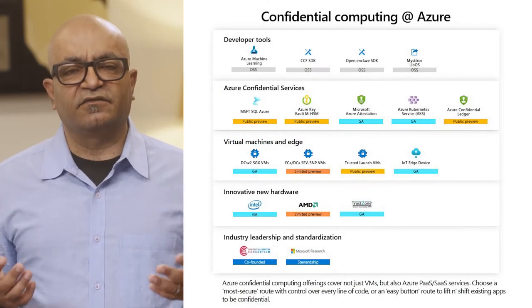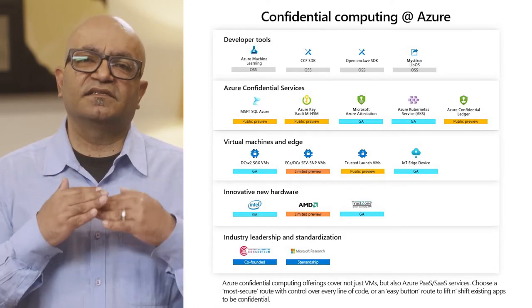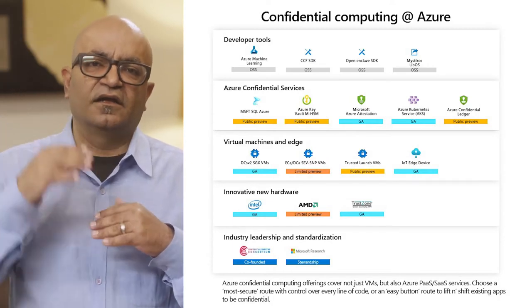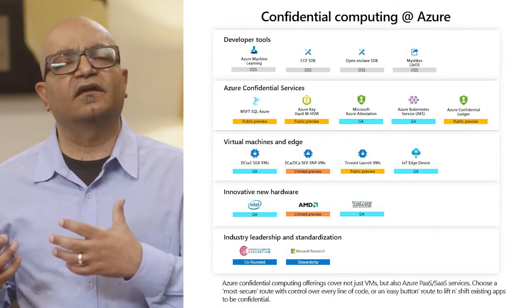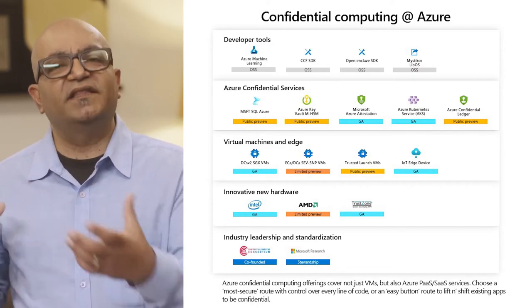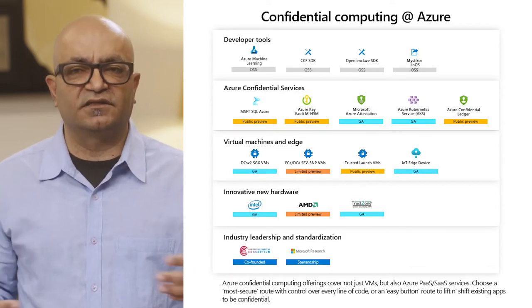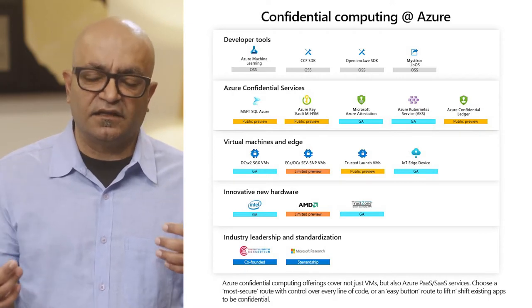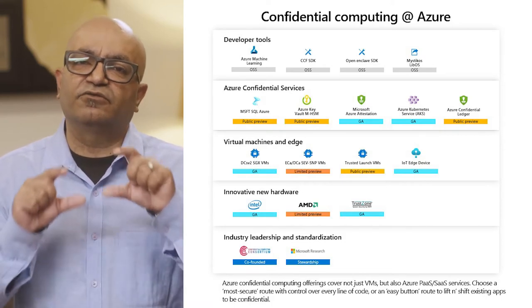Now let's switch gears to talk about how we think about confidential computing at Azure. We think about it as more than a virtual machine — as something that is entirely end-to-end on the stack. We have been working with the Confidential Computing Consortium and have Microsoft researchers well-renowned in the industry working to further the adoption of confidential computing. We are also working with hardware partners AMD, Intel, and ARM TrustZone to bring confidential computing capabilities right at the silicon level.